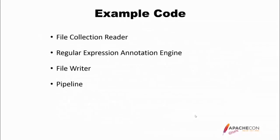Now let's get to some code. A pipeline consists of the collection reader, one or more annotation engines, and zero or more writers. We are going to create a collection reader that reads from files and modifies the content of the file to something more akin to a clinical document. We're going to create a regular expression annotation engine, a simple file writer that will output some information of interest, and then we're going to see how a pipeline is created to tie them all together.